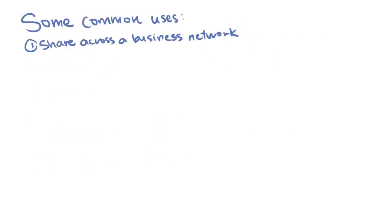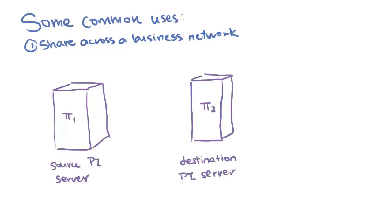The first is to make PI server data available to a business network so that users can access the data without altering the originals.